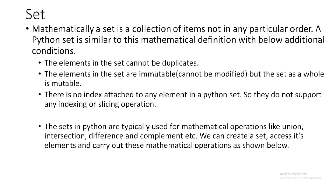Now let's talk about sets. Mathematically, a set is a collection of items not in any particular order. A Python set is similar to this mathematical definition but with some conditions. First, elements in a set cannot be duplicates — you cannot repeat an element. Second, elements in the set are immutable and cannot be modified individually, but the set as a whole is mutable. Third, there is no index attached to any element, so sets do not support indexing or slicing operations.